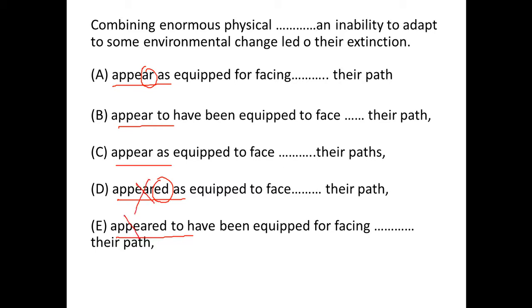We don't need simple past, so eliminate D and E. Next, we have 'appear as' versus 'appear to.' We use 'appear as' when we play a role in a movie or a theater. Here we don't have anything like somebody playing a role, so 'appear as' is wrong in this context.